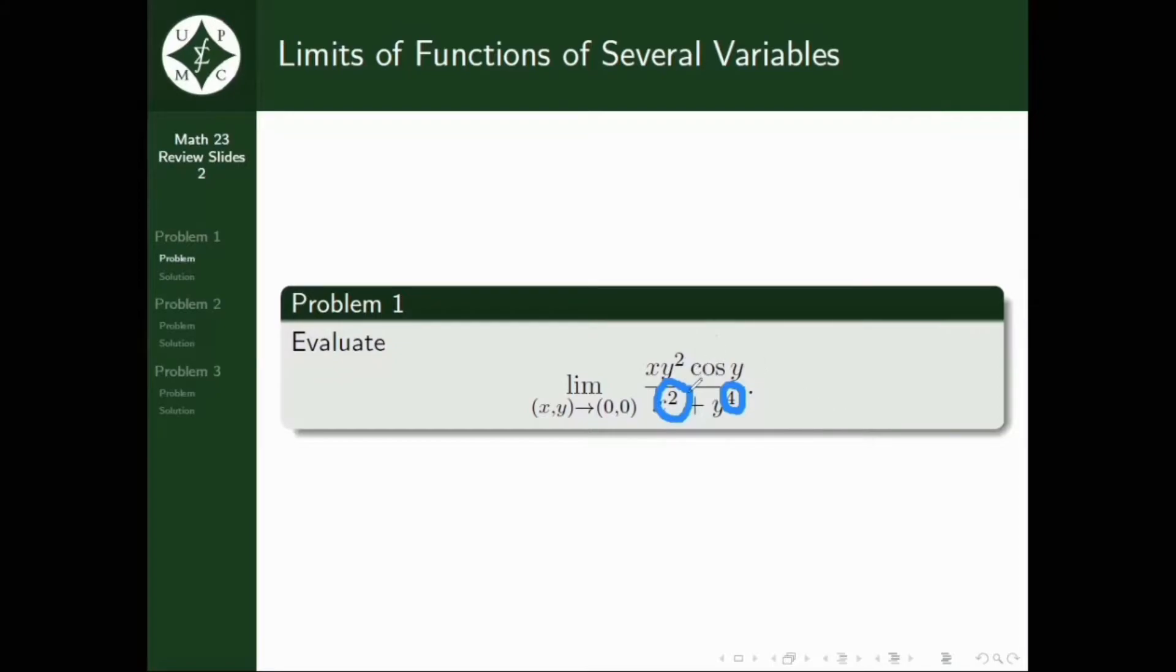Now, from there, ang naisip ko na lang is, baka pwedeng mag-consider ako ng isang function, wherein yung independent variable ay ang variable na may lower exponent. So, in this case, X. And that, yung dependent variable would be the one having the higher exponent. So, yung Y. And yung exponent ng Y must be the quotient of the higher exponent and the lower exponent.